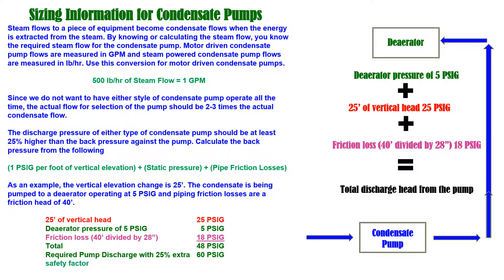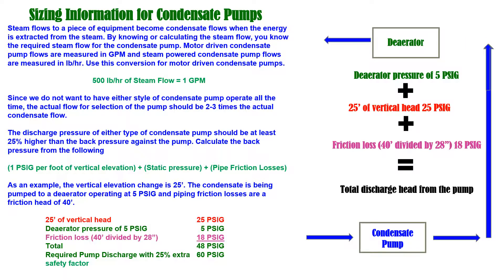The discharge pressure from a condensate pump is the sum of the vertical head, return line pressure drop, and static pressure in the deaerator. In this example, the total is 48 psig by calculation, and we suggest increasing the calculated value by a safety factor of 25%.